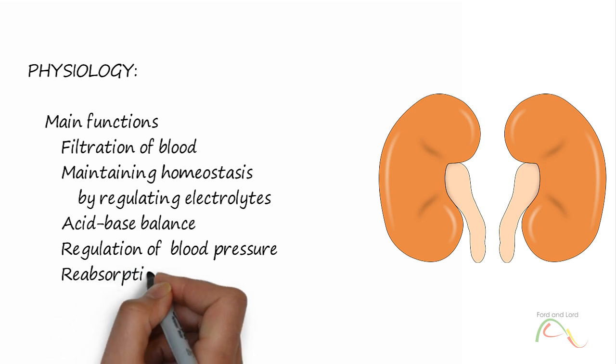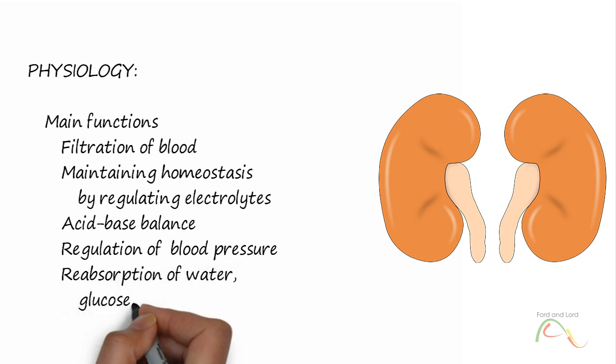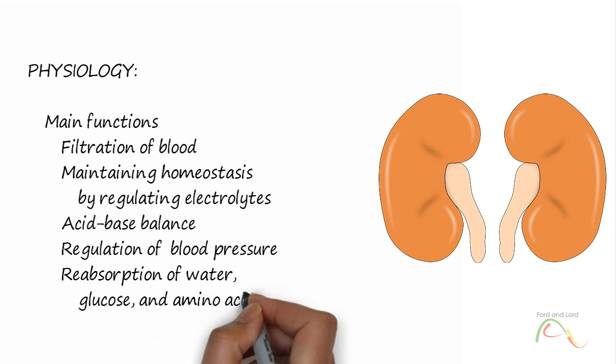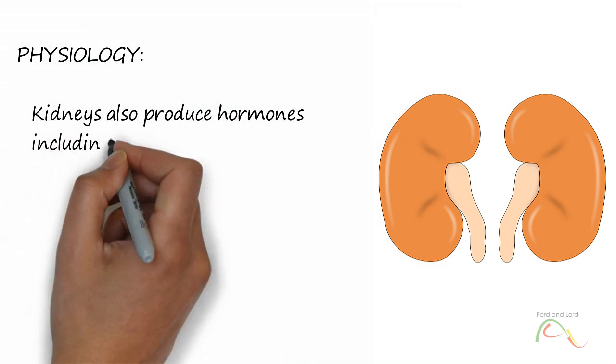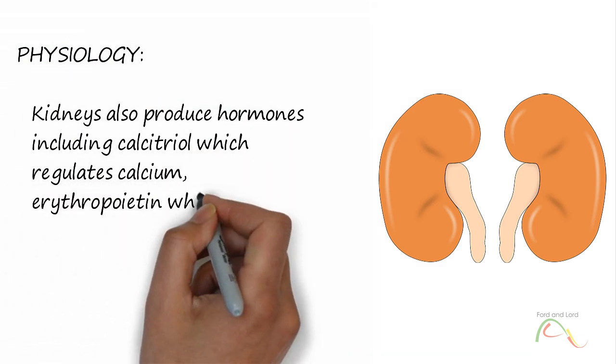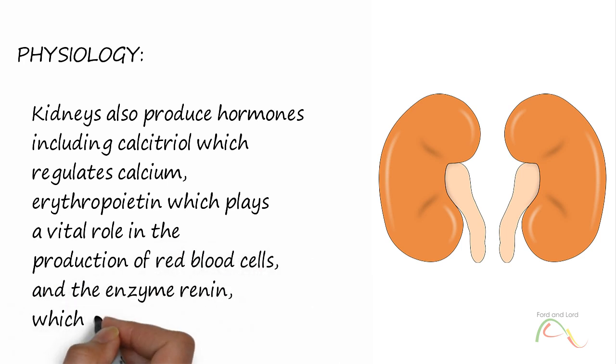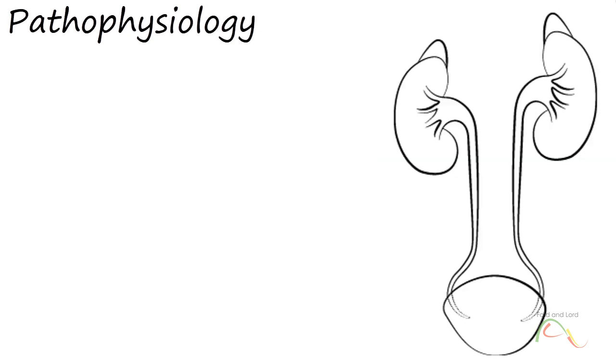Kidneys are also responsible for the reabsorption of water, glucose, and amino acids, and maintain the balance of these molecules in the body. In addition, the kidneys produce hormones including calcitriol, which regulates calcium, erythropoietin, which plays a vital role in the production of red blood cells, and the enzyme renin, which regulates extracellular fluid.